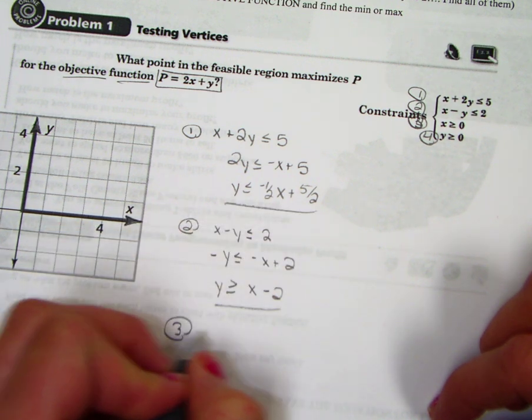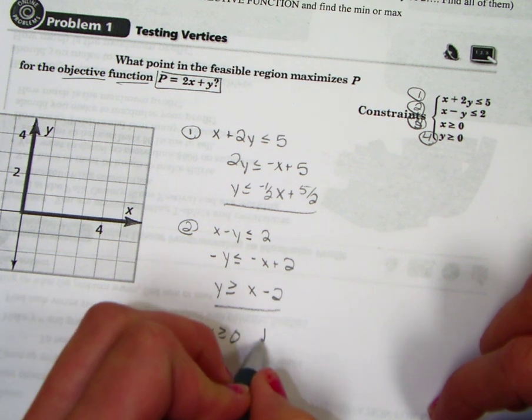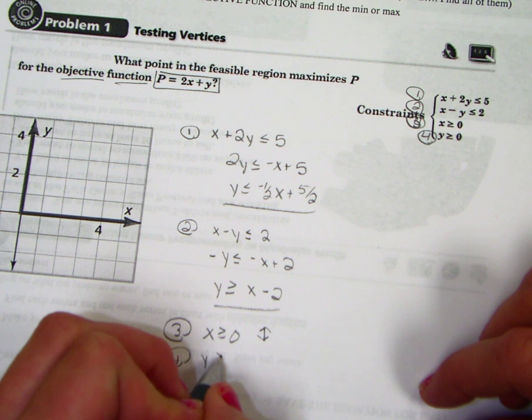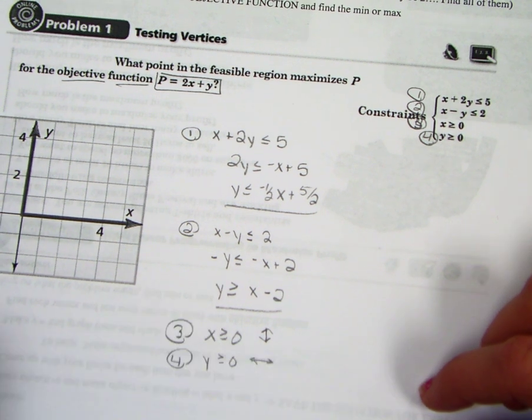And then 3 is x is greater than or equal to 0. That's just going to be a straight up and down line. And then 4 is y is greater than or equal to 0. That's just going to be a straight left and right line.